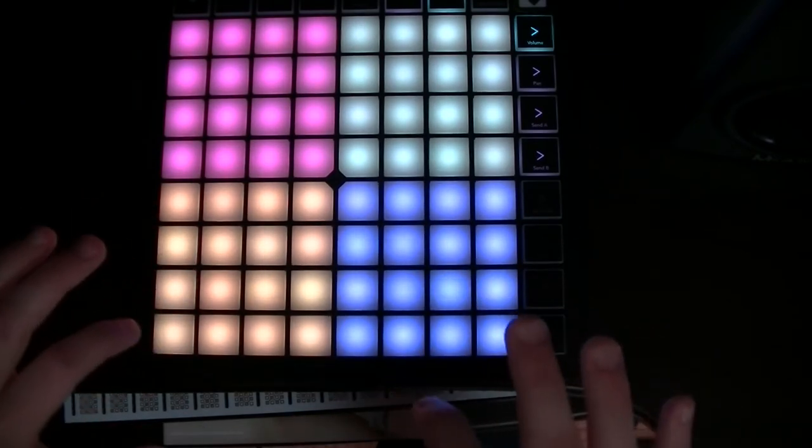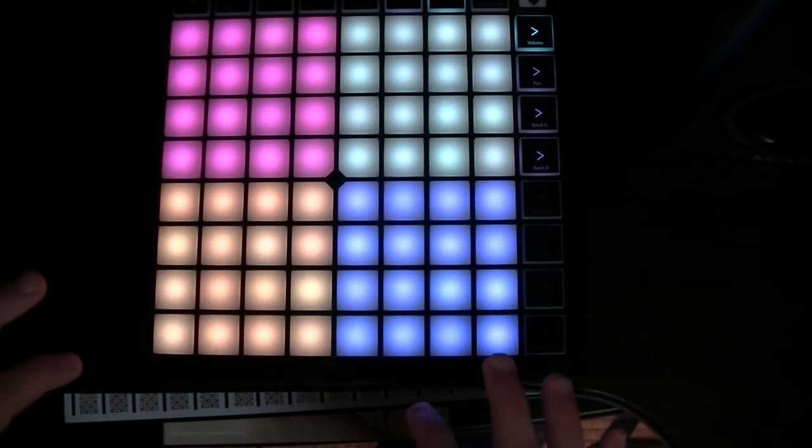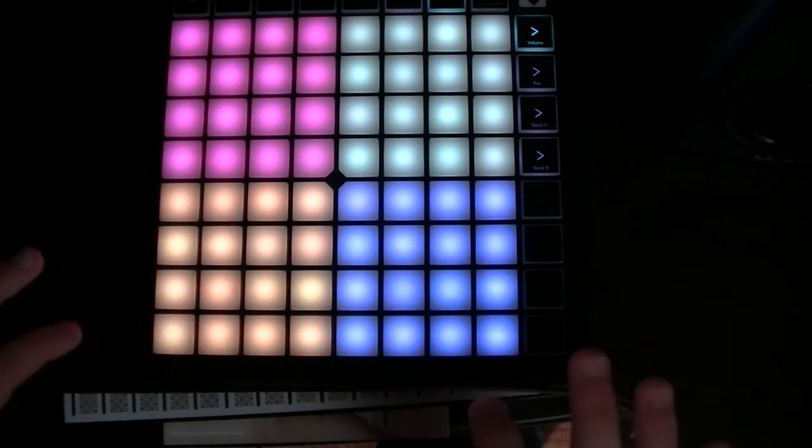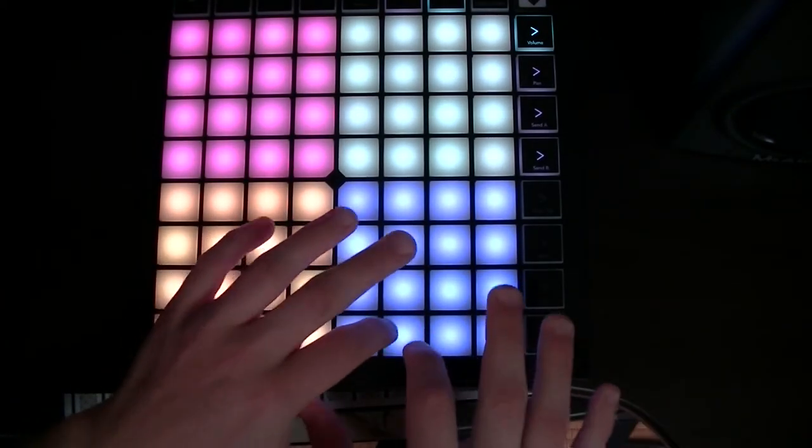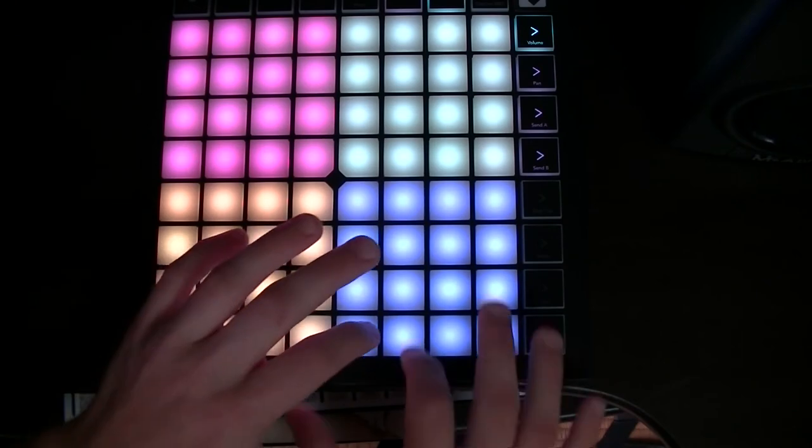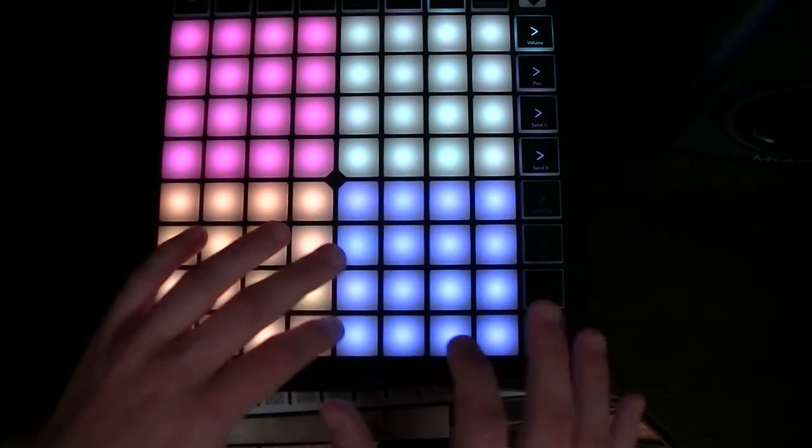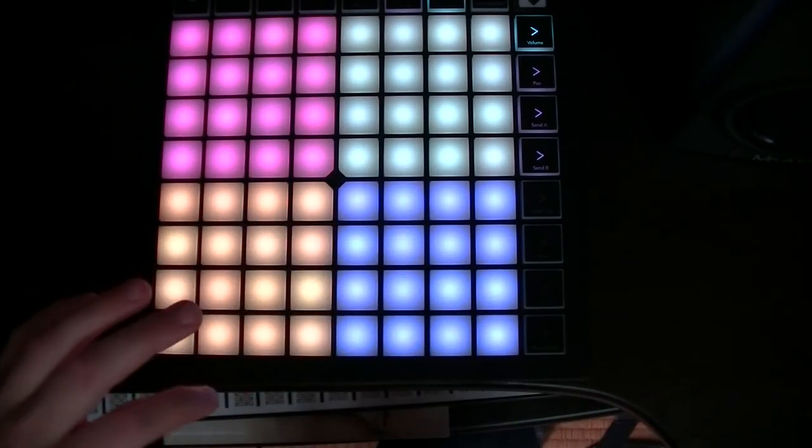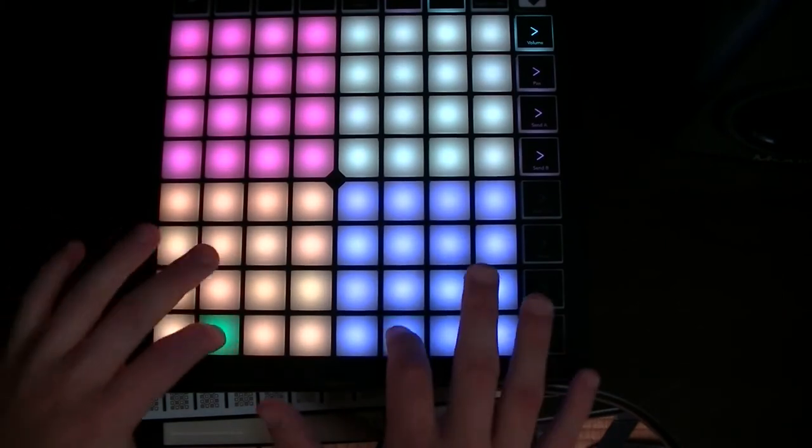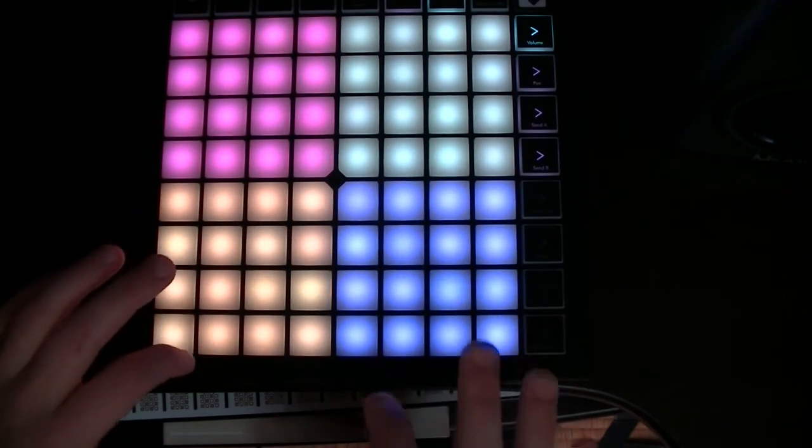So to do a flam you really need to be on two different pads. Because on one pad a lot of the time it doesn't work. Because you really need to play staccato. You really need to have a gap between your hits on one pad. But on two, you can make them run together.